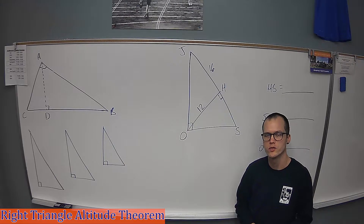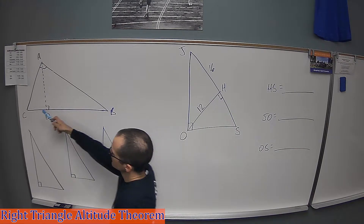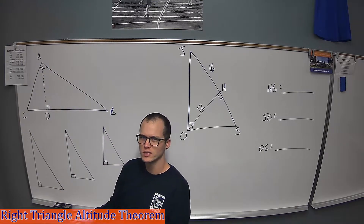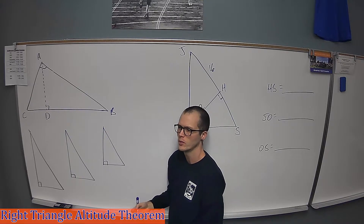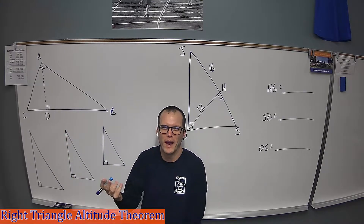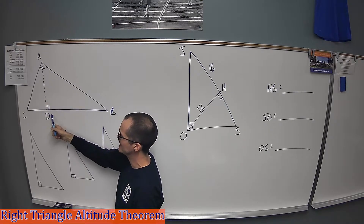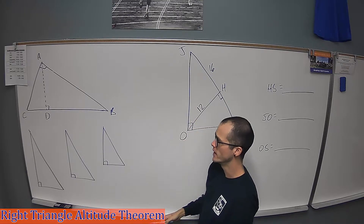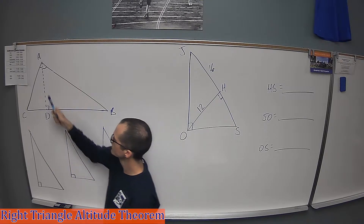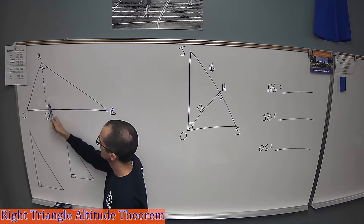Today we're talking about the Right Triangle Altitude Theorem. We have a right triangle ABC, and then we drop in an altitude — remember, altitude is just another word for height. It's perpendicular to the base and goes to the highest point. That's segment AD. Notice what happens: our one big right triangle turns into three separate right triangles.